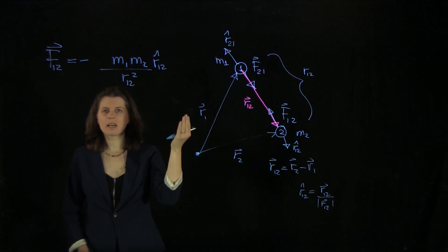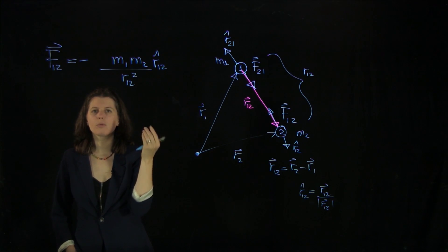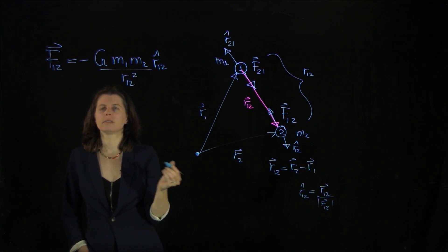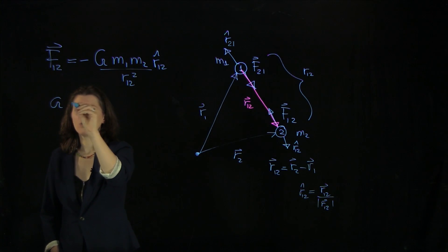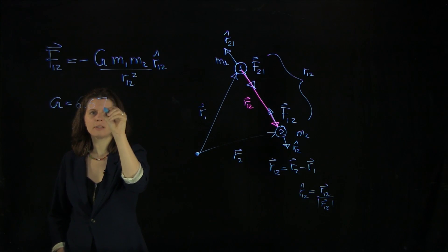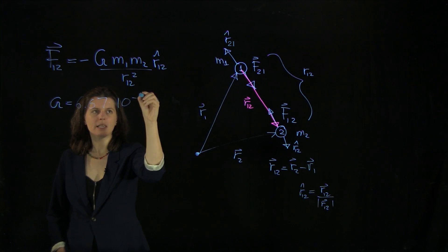And as it is the case with most of these laws, there's a proportionality constant. And Newton called this capital G. And G, as we know today from experiment, is 6.67 times 10 to the minus 11.